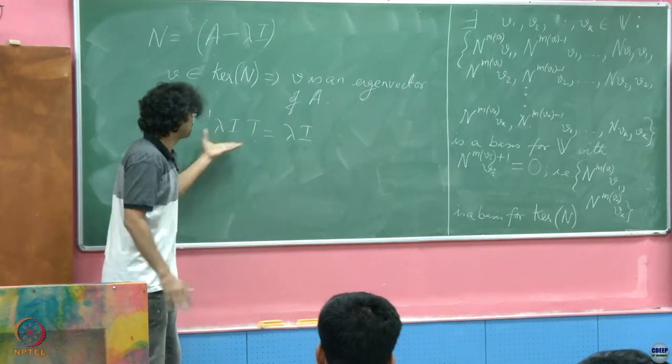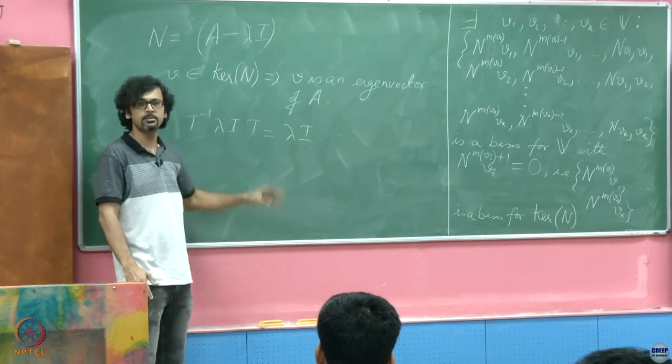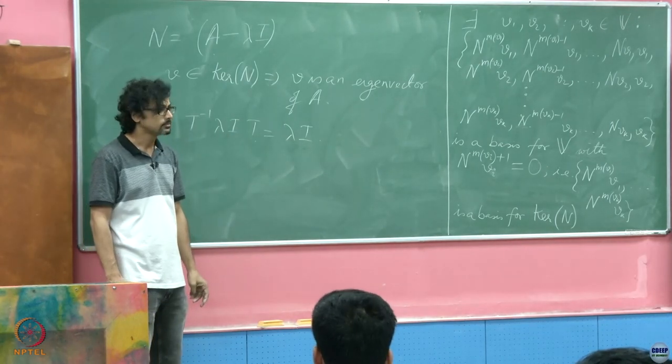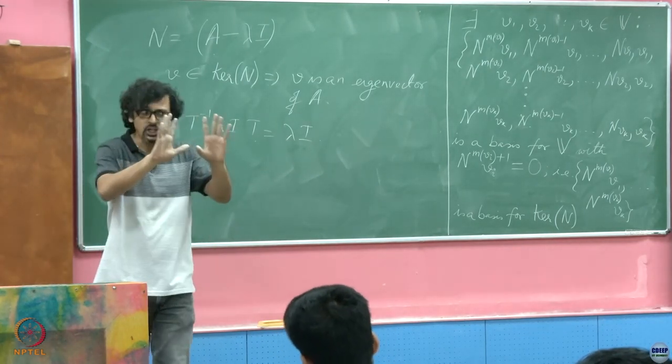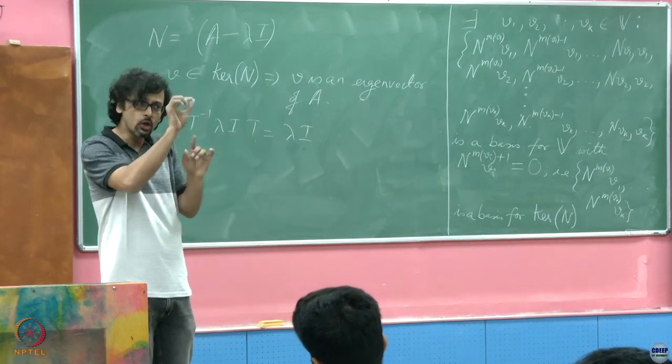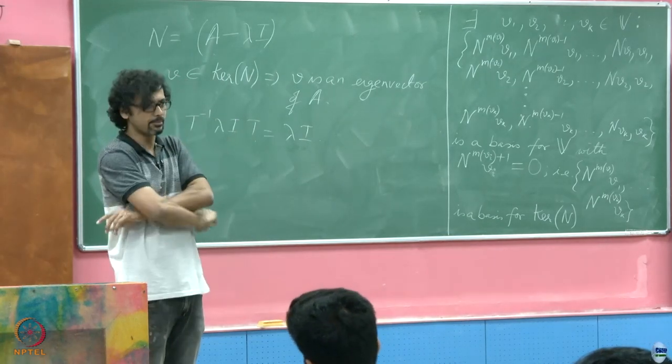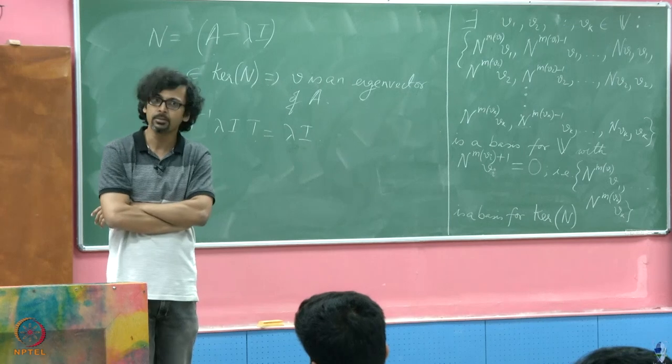But if you know that a matrix is not diagonal, and yet it has all its eigenvalues at the same location, then there's no way you can diagonalize it. Because if you could, then every other matrix would have been the same diagonal matrix.